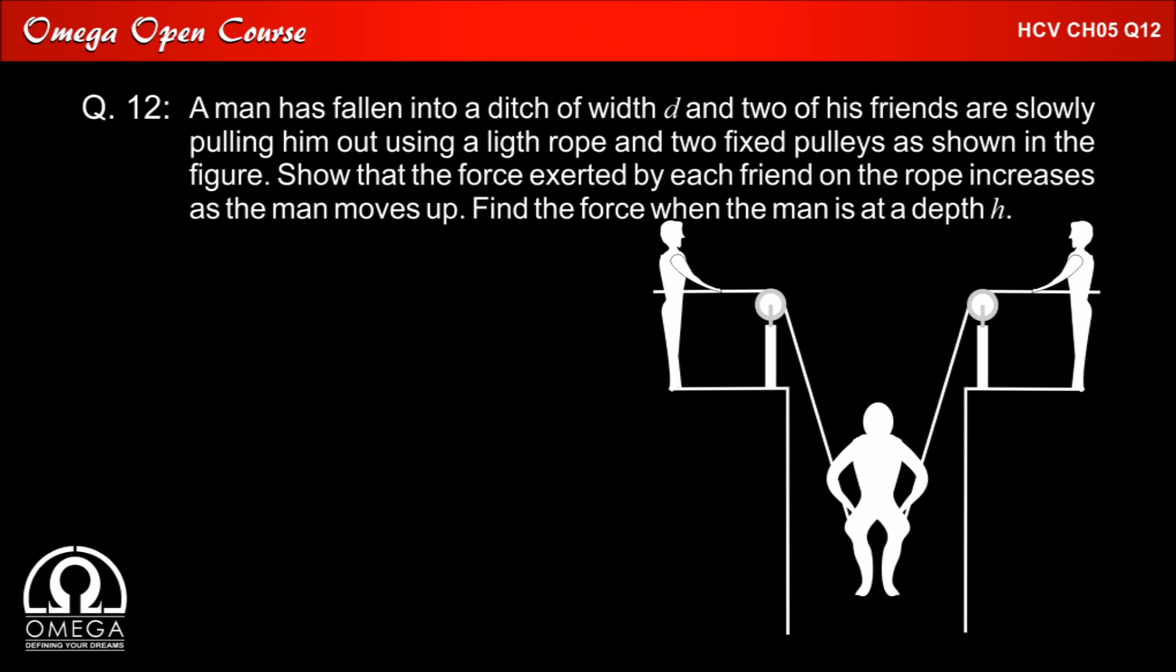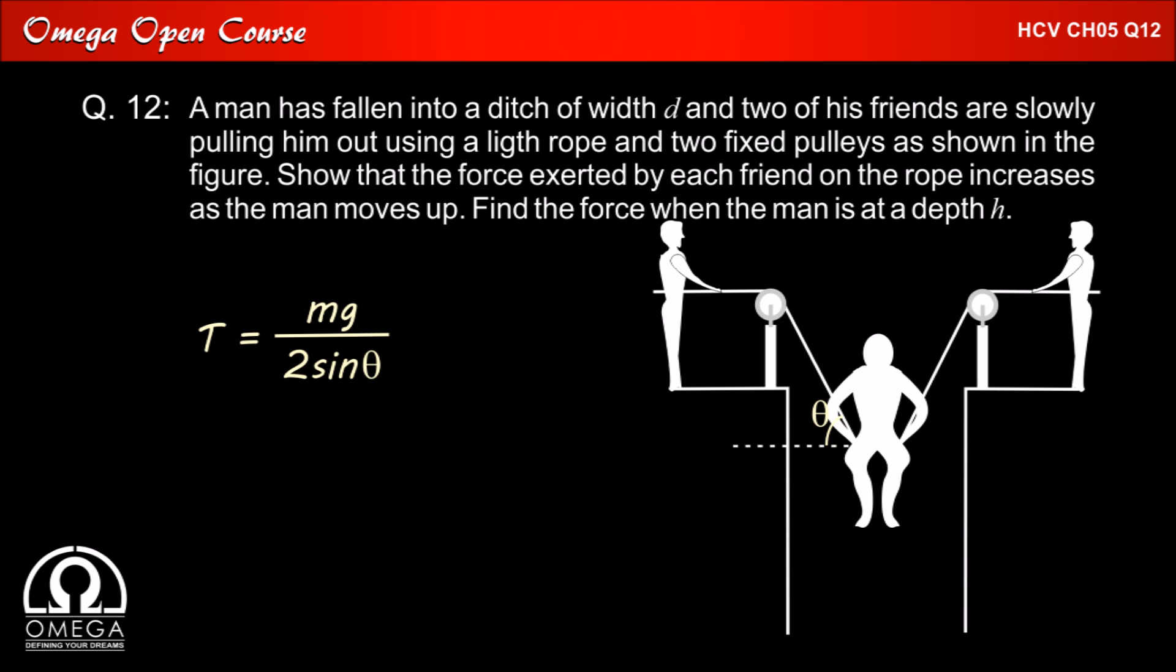Now for the first part of the question, we can see that as the person rises up, the angle theta decreases and thus the value of tension, which is mg divided by 2 sin theta, since theta is decreasing, the value of sin theta is decreasing and hence tension will increase.